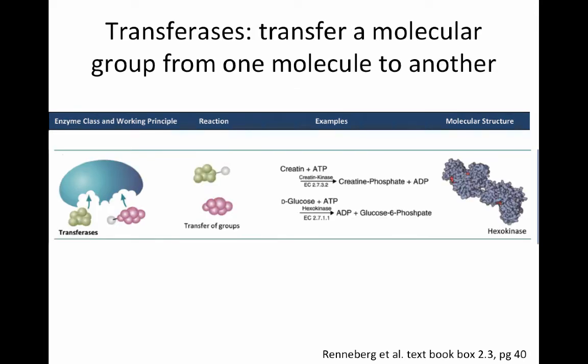The next group are transferases. These enzymes transfer a molecular group from one molecule to another. Our example is D-glucose plus ATP — the ATP has an extra phosphate side chain. These fit into two active sites of the enzyme, the enzyme folds around them, and the products are ADP and glucose-6-phosphate. So the transferase transfers a phosphate from ATP to glucose, producing ADP and glucose-6-phosphate.